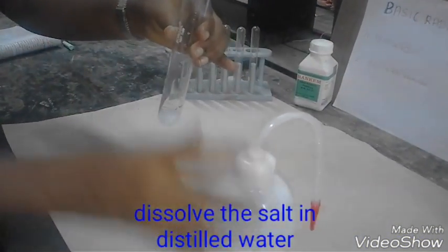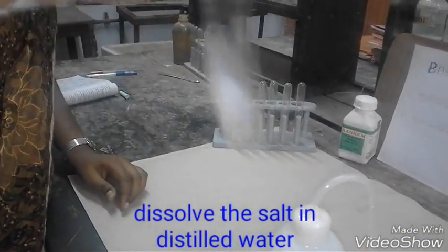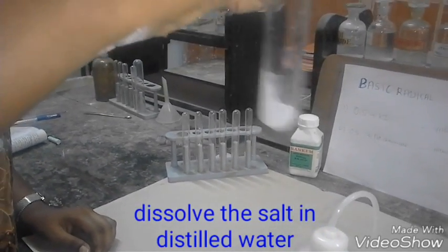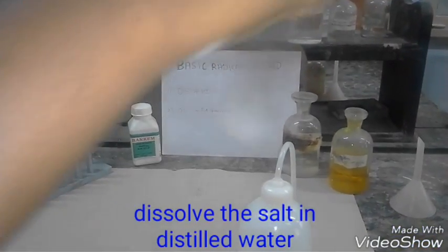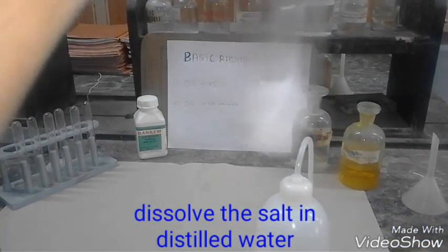Pour a little amount of water into the boiling tube. The solution must be below half of the boiling tube. Dissolve the salt completely in distilled water till the solution is homogenous.